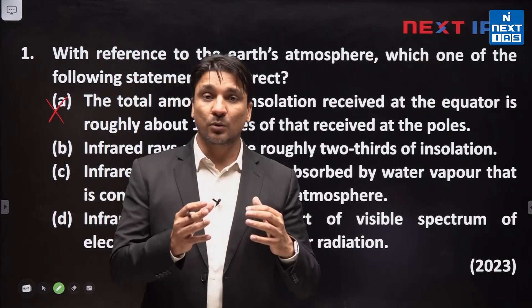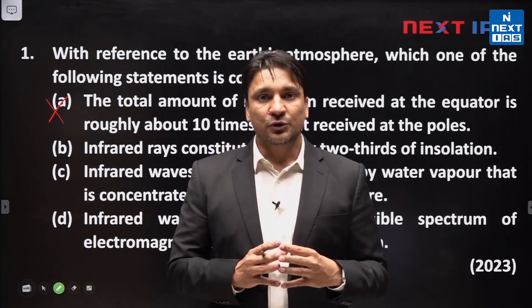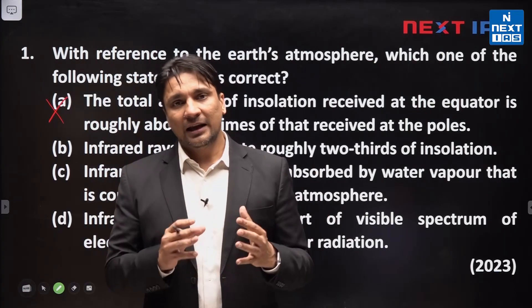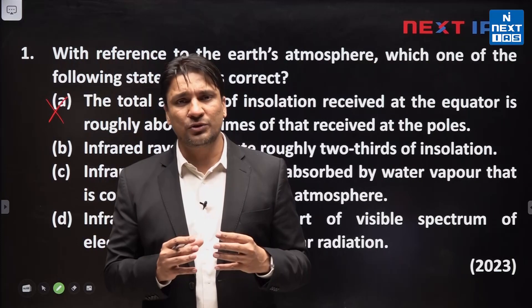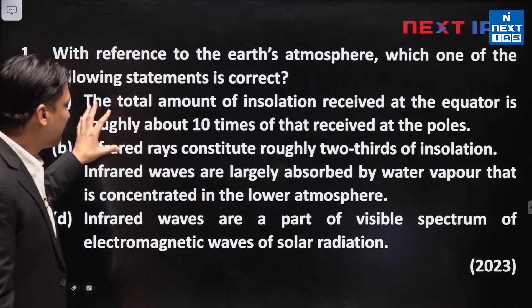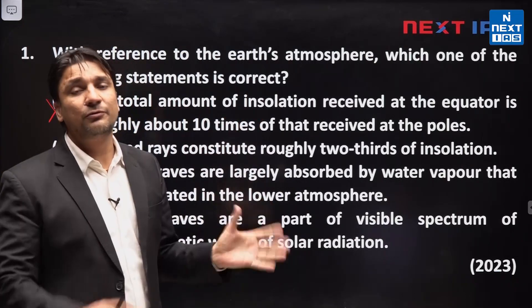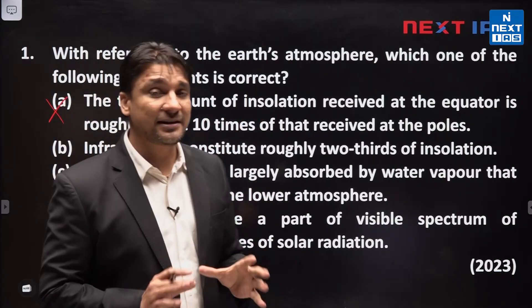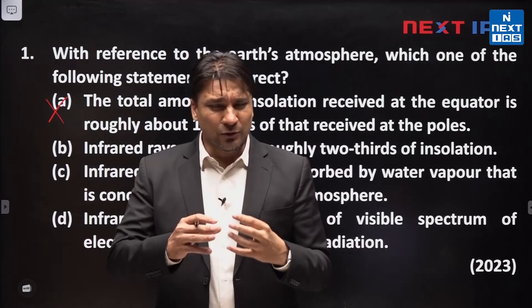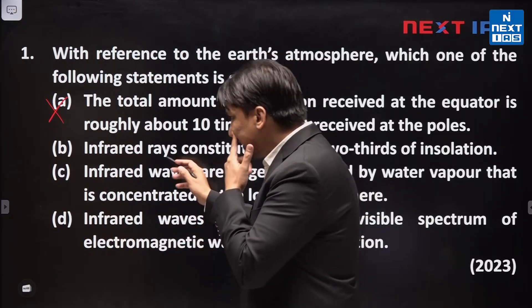Whereas in winter season, due to lack of sunlight, insolation is very low. So if we take average values, insolation in tropical or equatorial areas is around four to five times that of polar areas. But the statement says 10 times, which is much higher than four or five times, so this is incorrect. The correct statement would be that equatorial areas receive around four to five times the insolation received in polar areas.